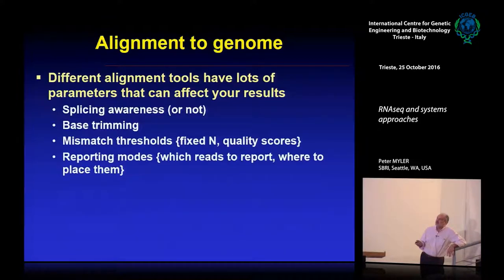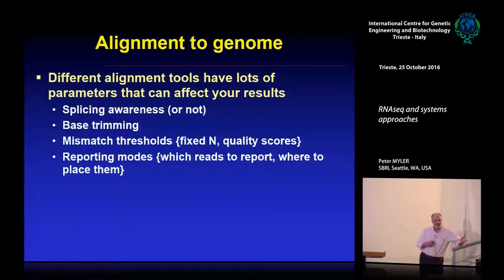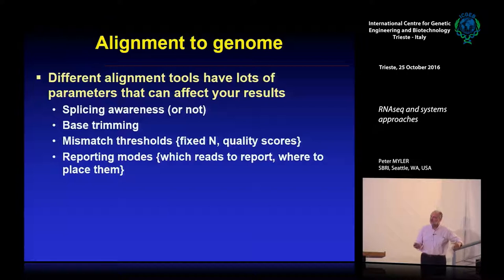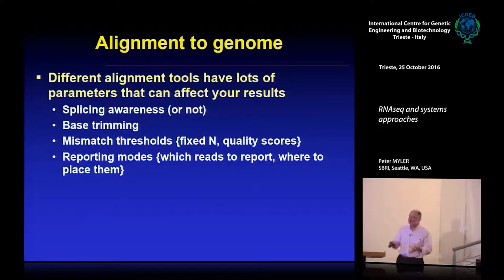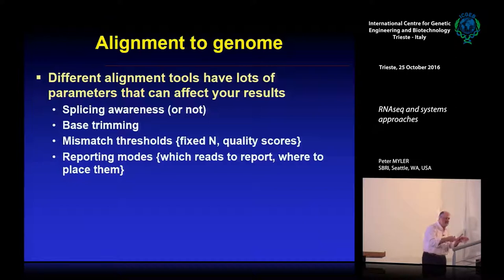When doing alignment, different tools have many parameters. You need to consider whether you have splicing — if so, you need a splice-aware program. You can also trim reads and adjust trimming parameters, though I generally use the defaults. The most important considerations are the mismatch threshold — how many mismatches you allow between each read and the genome — and the reporting mode.